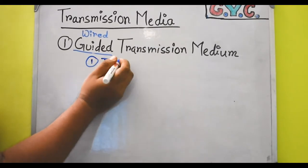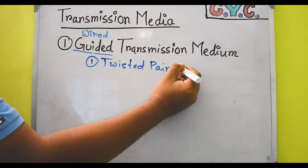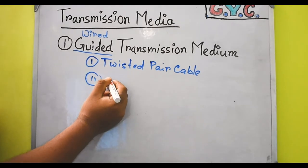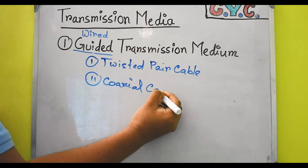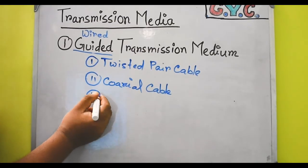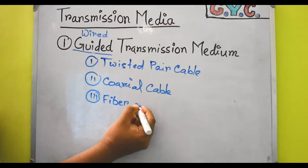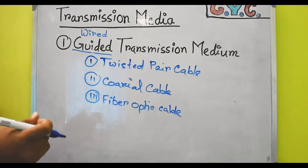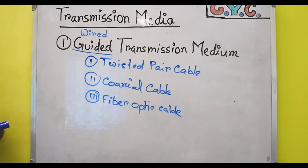Let's see how we can classify guided transmission medium further. In guided transmission medium there will be three different topics we will be talking about. The first one is twisted pair cable, the second one is coaxial cable, and the third one is fiber optic cable. So in this video we will discuss broadly about these three wired cables: twisted pair cable, coaxial cable, and fiber optic cable.